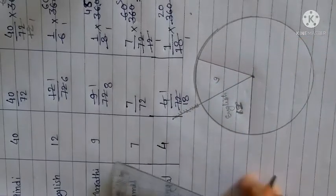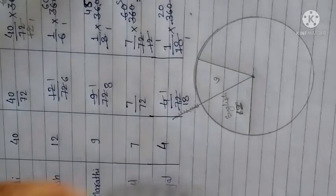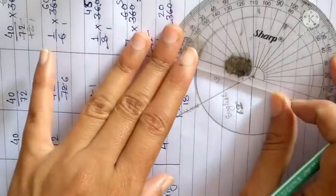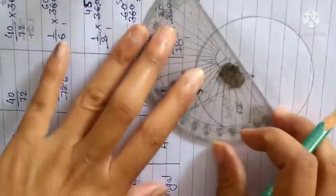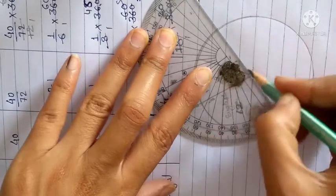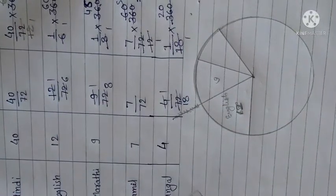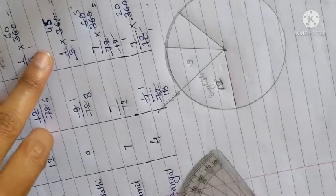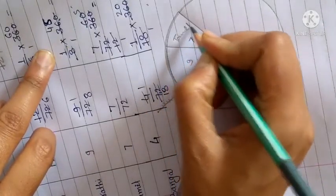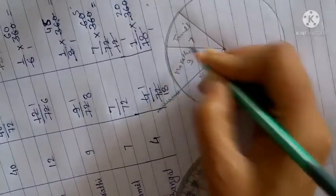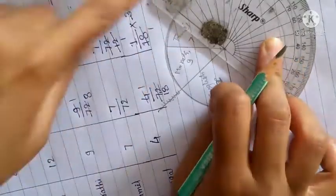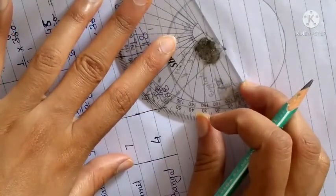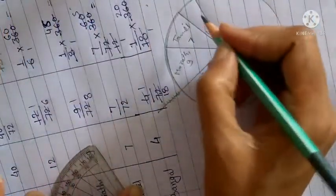Next is Tamil with 35 degrees. Taking the right-hand point, mark 35 degrees and draw the line. This gives 35 degrees for Tamil with 7 students. After 35 degrees comes Bengali with 20 degrees. Mark 20 degrees from the right-hand point and draw the line. Bengali has 4 students.